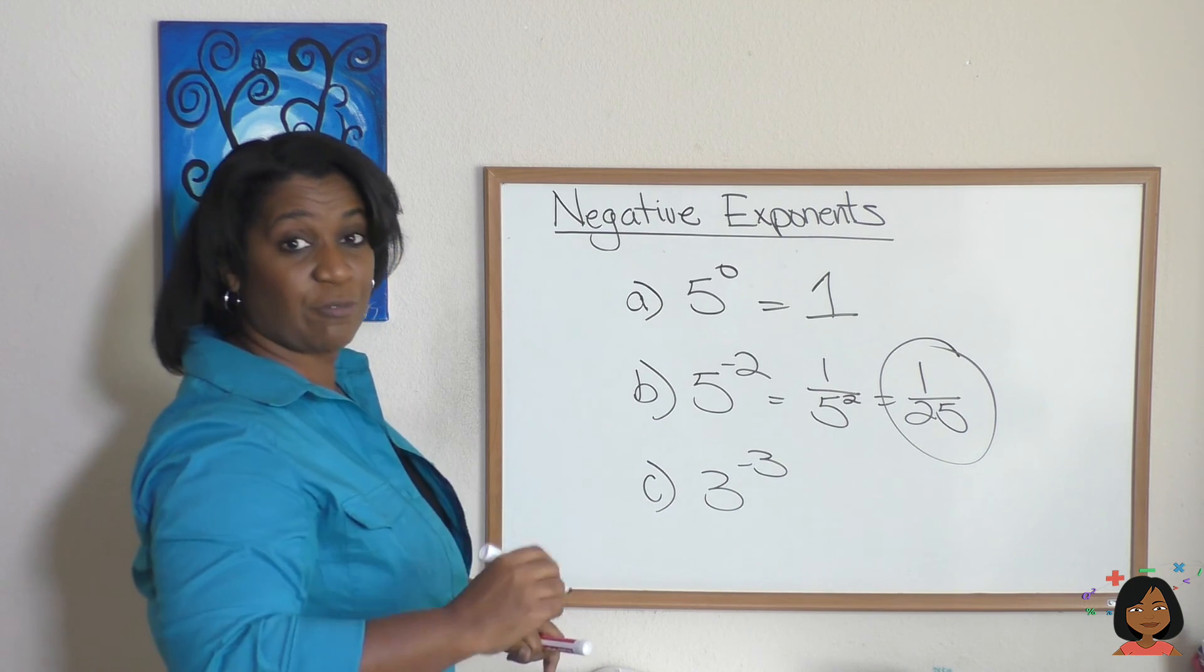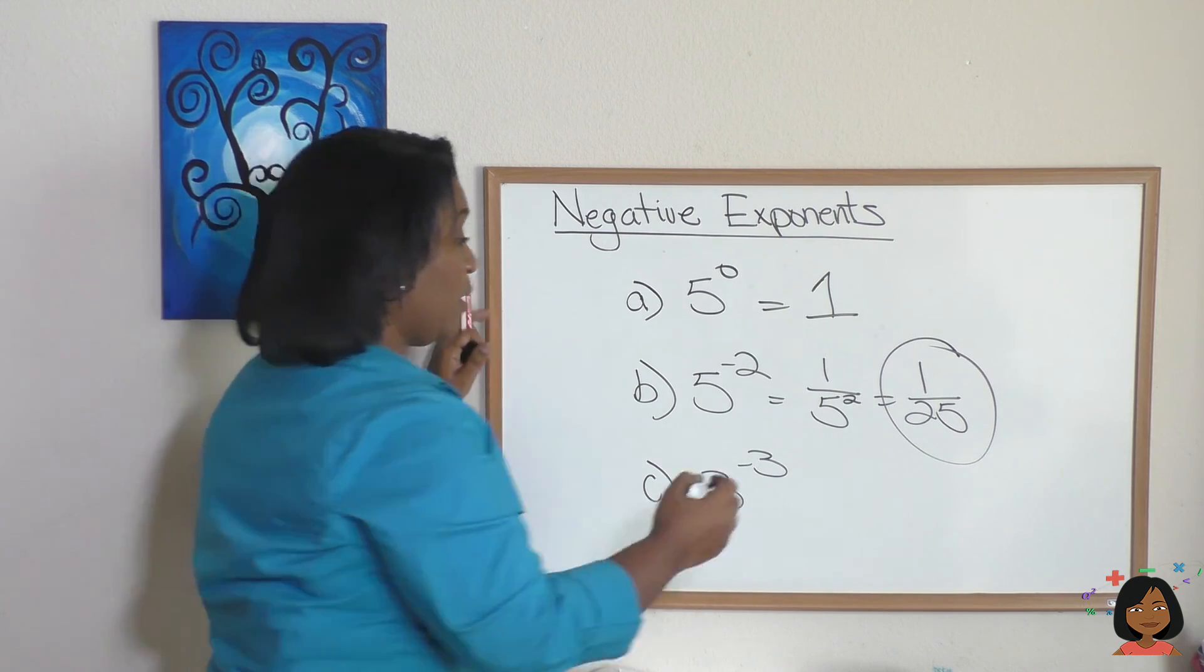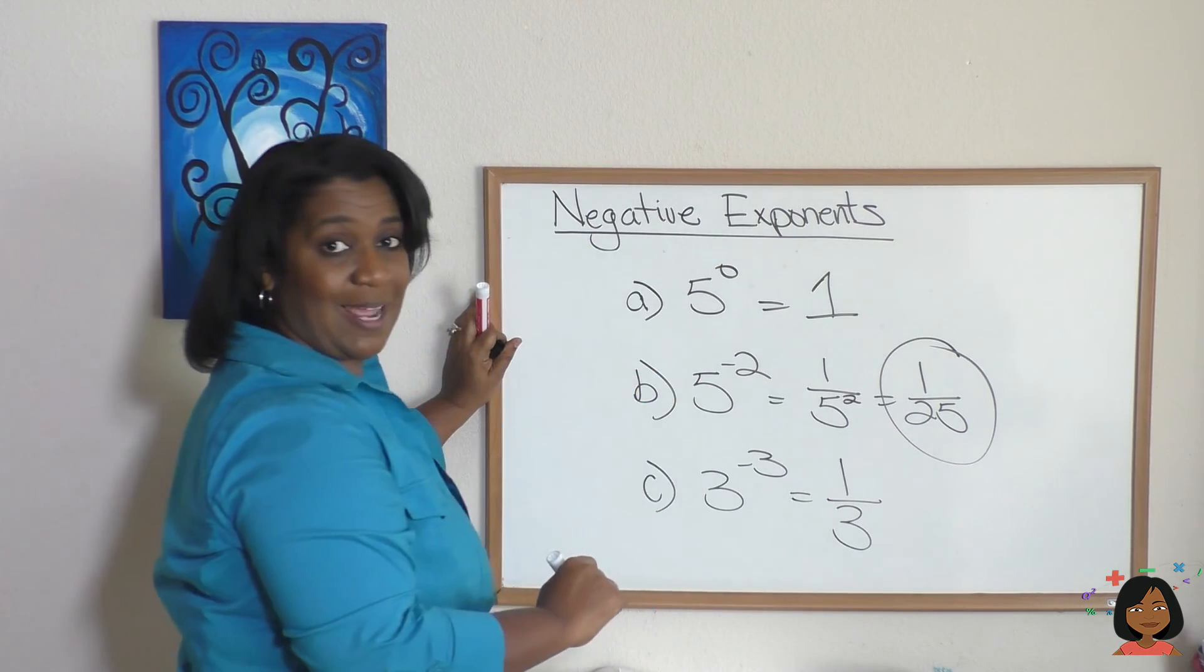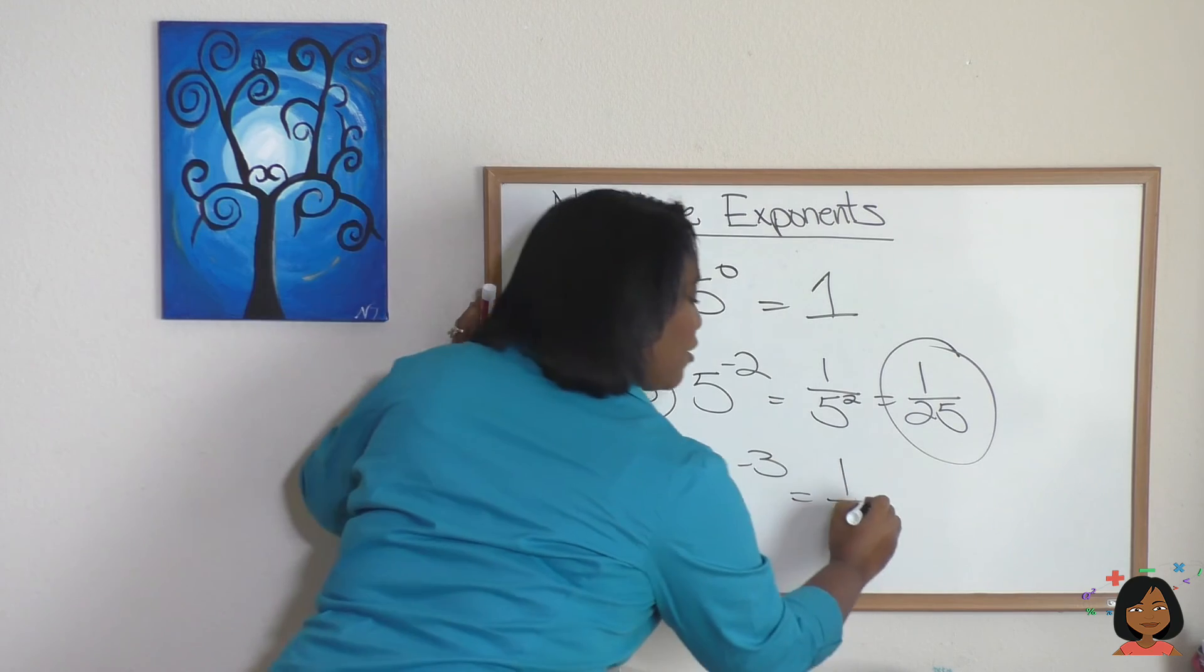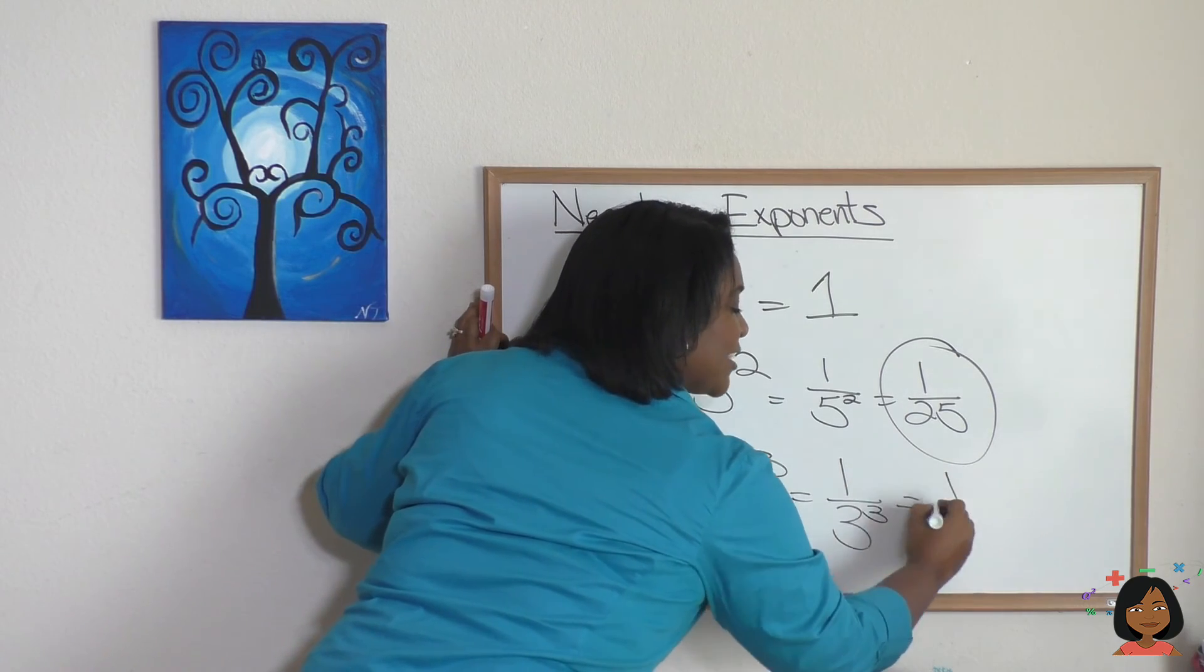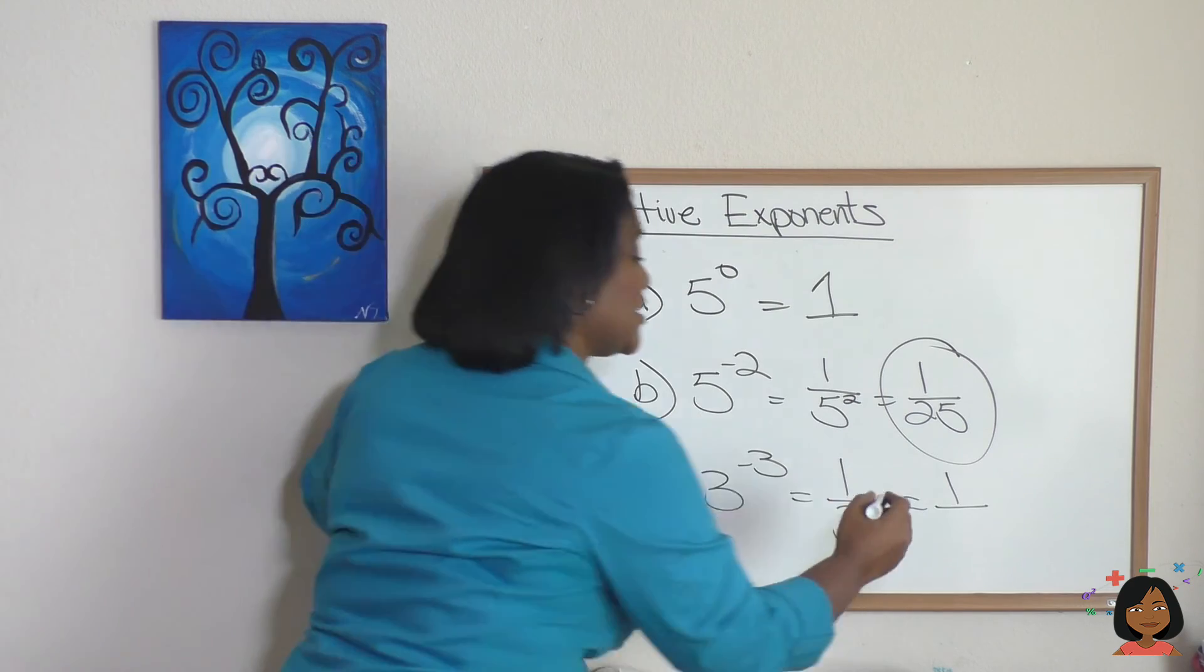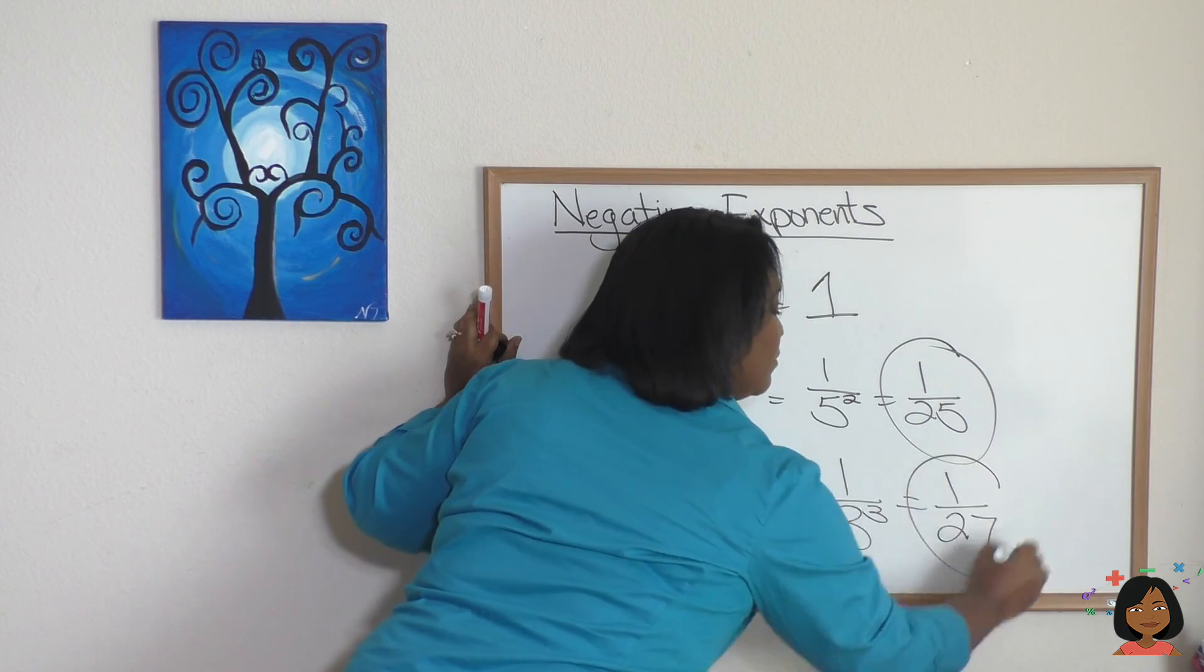Okay. Let's do the last one. 3 to the negative 3rd power. We're going to get the reciprocal. 1 over 3. Let's keep that exponent, but drop the negative. 3 to the 3rd, and that simplifies to 3 times 3 is 9, 9 times 3 is 27.